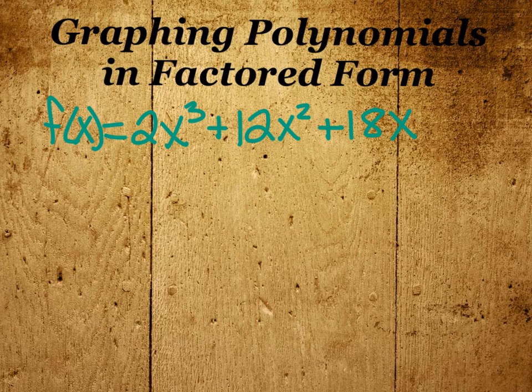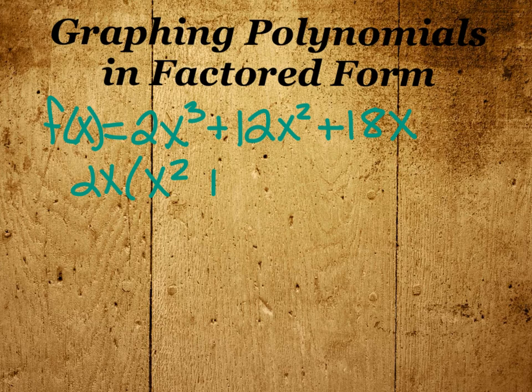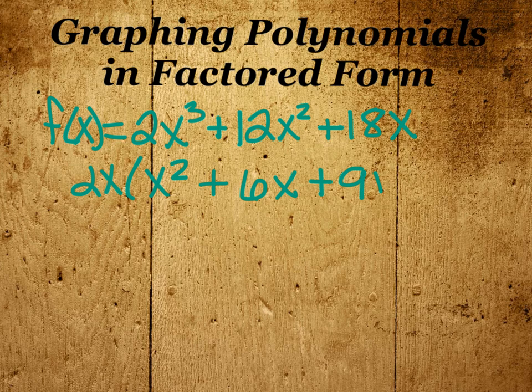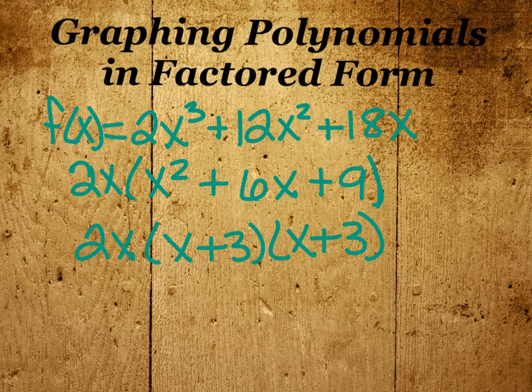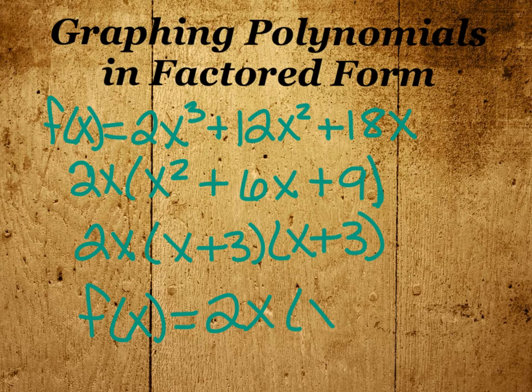Here's a polynomial written out in standard form, it's cubic, and we're going to factor it. This one's easy to factor. We have a GCF of 2x, and then we've got x squared plus 6x plus 9. And then that factors, so we've got 2x, and then we have x plus 3, and x plus 3. Or, as we should write it, f of x equals 2x and x plus 3 all squared.